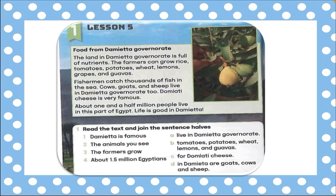So the guava tree is found in Damietta. Fishermen catch thousands of fish in the sea. Cows, goats, and sheep live in the Damietta governorate too. The Damietta cheese is very famous — it's a white cheese with pepper, tasty and a little salty. This is called the Damietta cheese.